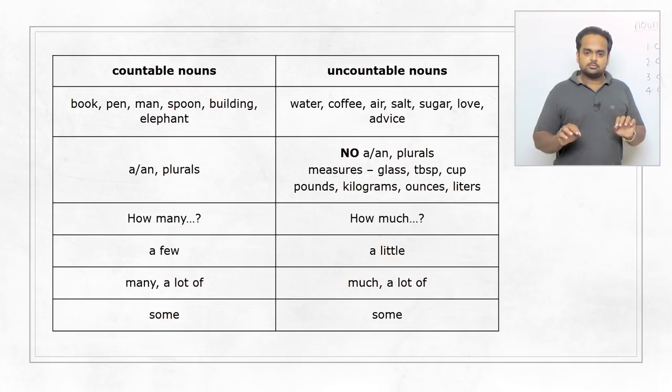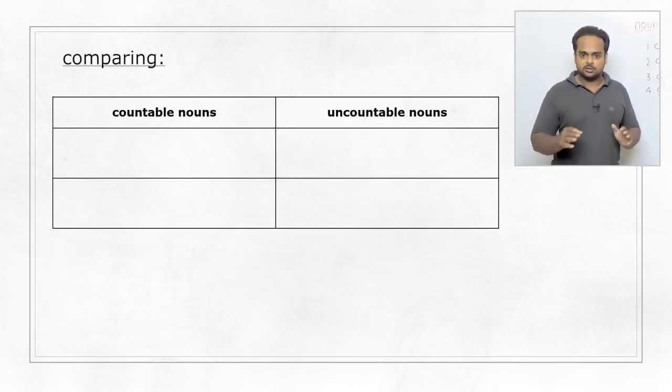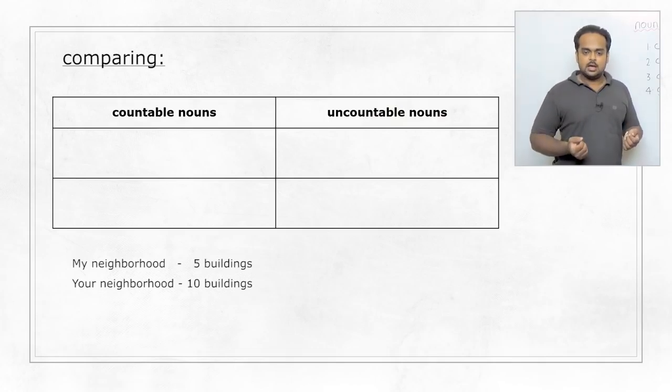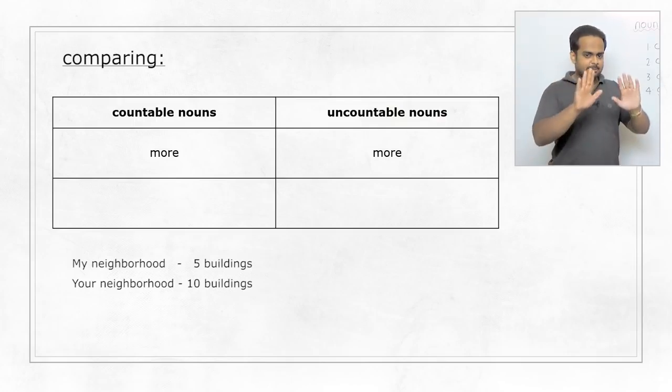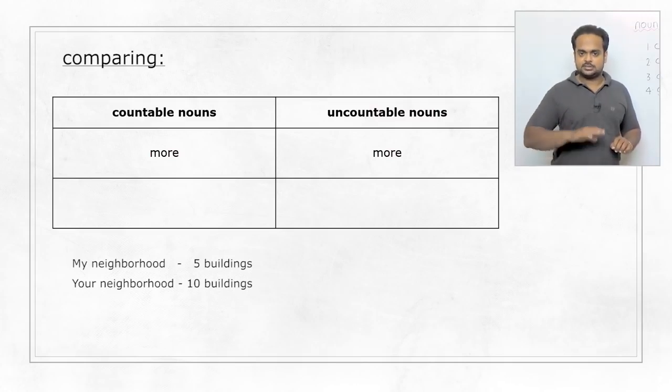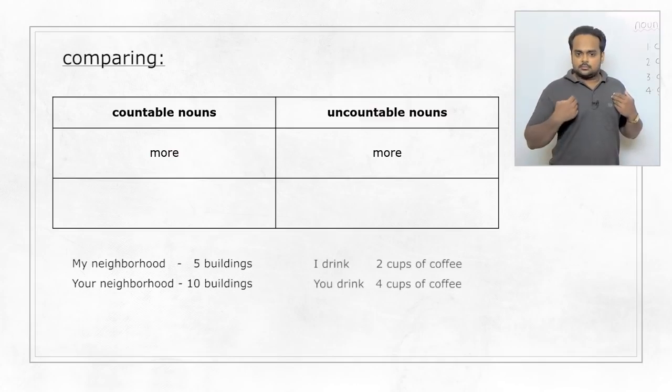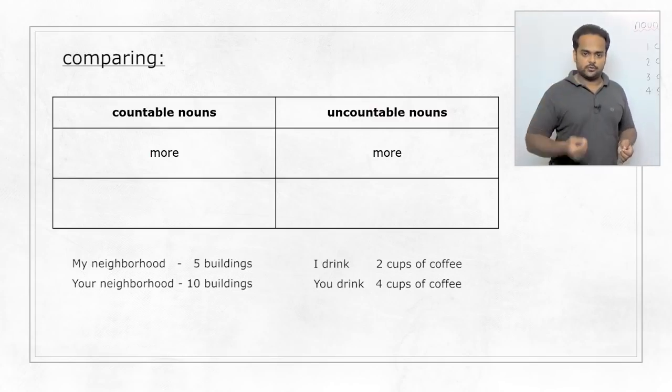Now I want to tell you about an area where a lot of students make mistakes, so pay close attention. And this is when we want to make comparisons. Let's say that in my neighbourhood, there are five buildings. In your neighbourhood, there are ten buildings. So we can say that there are more buildings in your neighbourhood. And let's take another example, this time uncountable nouns. I drink two cups of coffee a day. But you drink four cups of coffee a day. So you drink more coffee. But what about the opposite? We can say that I drink less coffee.